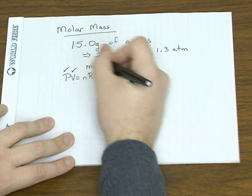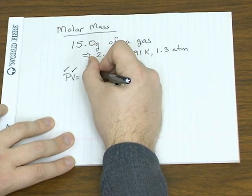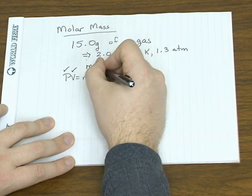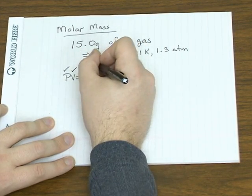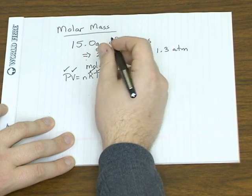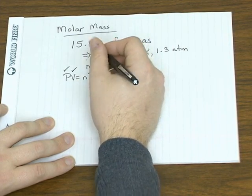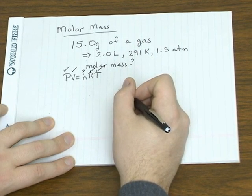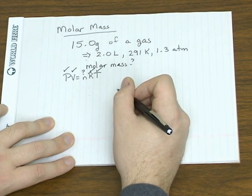So you compare what we've got to what's in the ideal gas law. We're given a pressure, a volume, R, and a temperature. Remember R is the gas constant, it's always given. The thing we don't have is n, the number of moles.